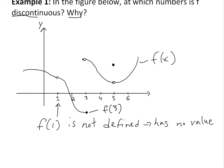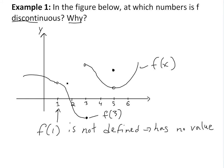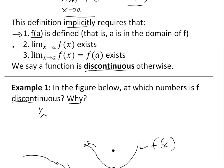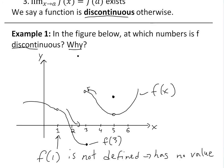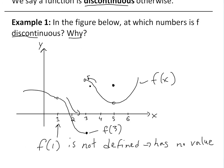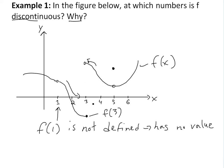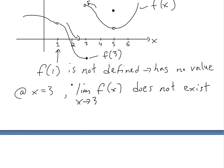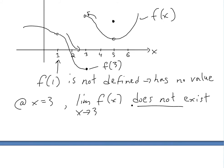But the limit at x=3 doesn't exist, because approaching from the left gives one value and approaching from the right gives a different value. The left and right-hand limits must be equal for the limit to exist. So at x=3, the limit as x approaches 3 of f(x) does not exist, and thus it's discontinuous.